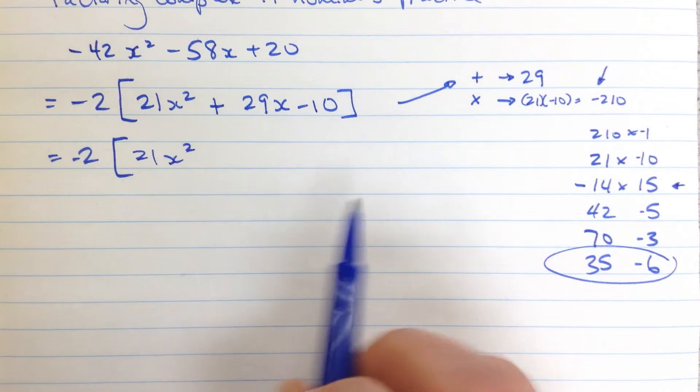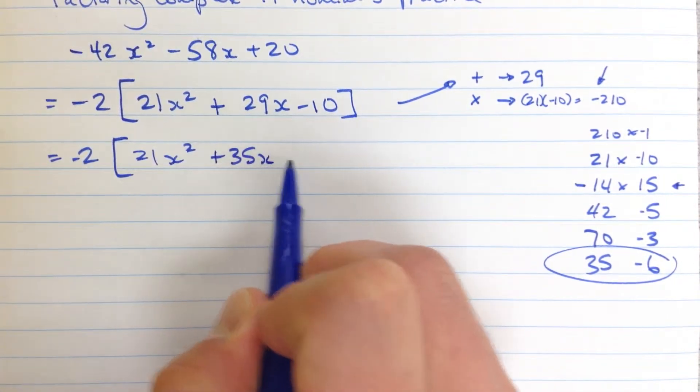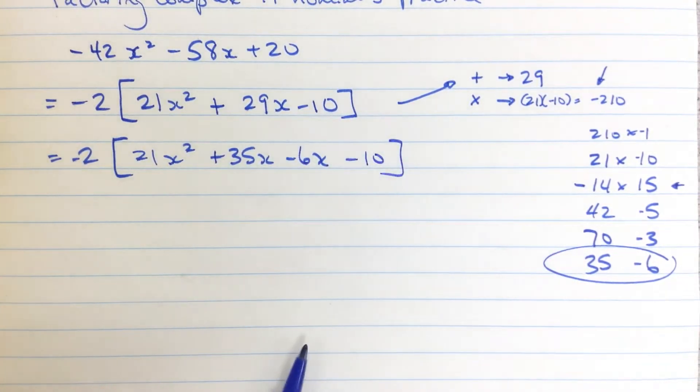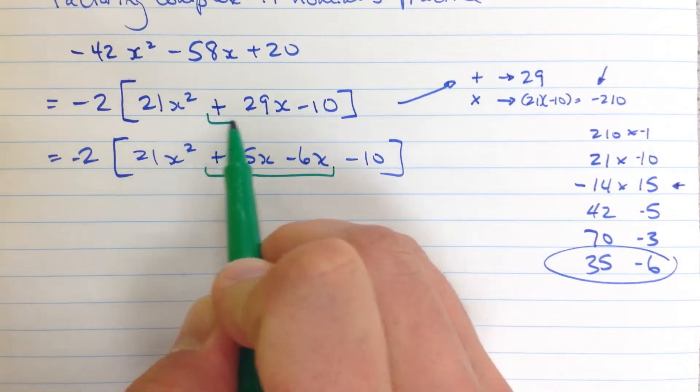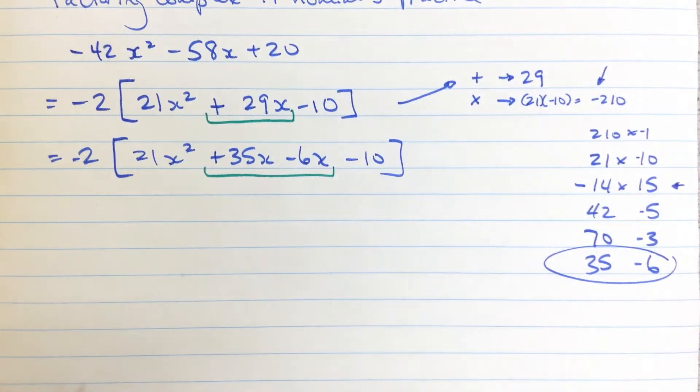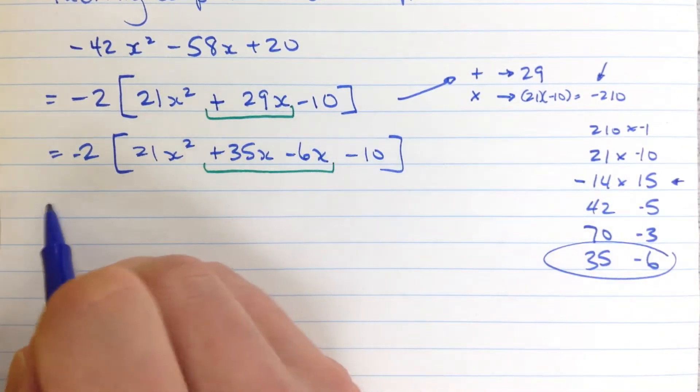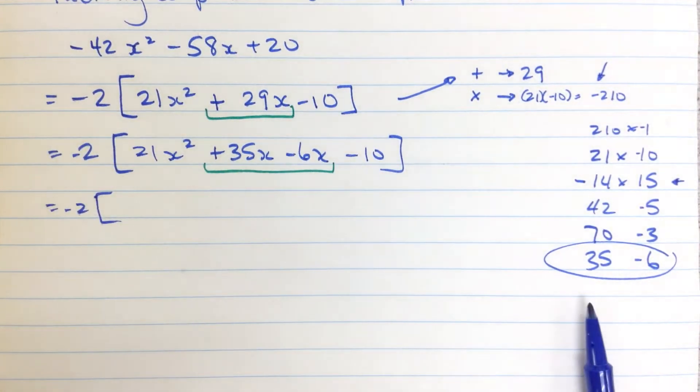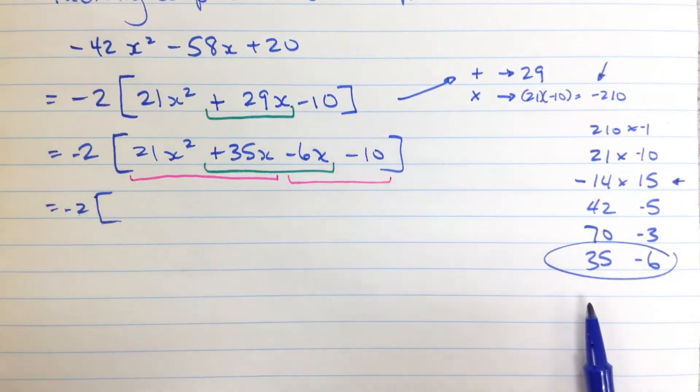So 21x². Now here, I'm taking this apart into two pieces. Plus 35x minus 6x. That's the 29x. Minus 10, and close my bracket. Let me just underline this here. This piece right here is the decomposition of that piece. It should, if you were to simplify this, you'd get back to what you had before. So we're separating that out, negative 2 times, and now we need another color here. I'm going to take these two pieces together, and these two pieces together, and factor each of them separately.